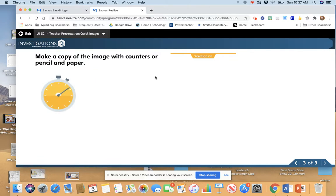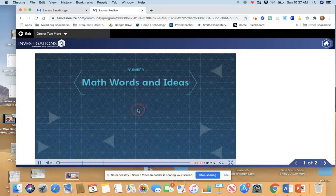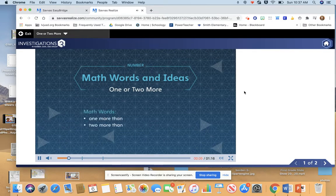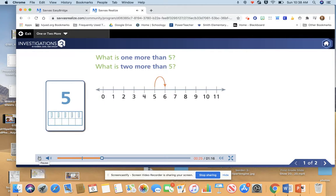Now we are going to watch a short video on adding one or two more to a number. One or two more. I am counting on from five. What is one more than five? I can count on from five on the number line to find the answer. I can say five and one more is six. What is two more than five? I can say five and two more is six, seven.